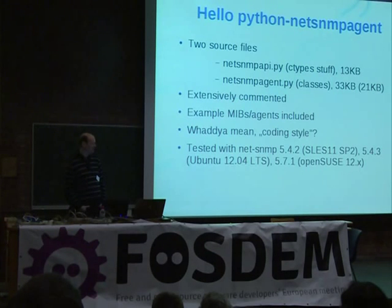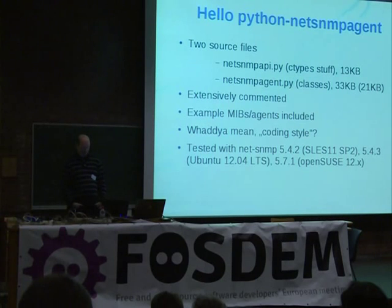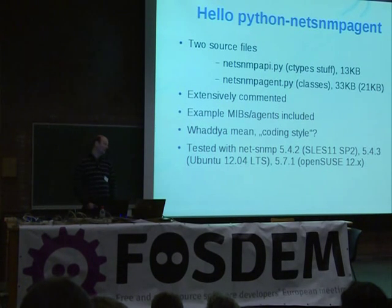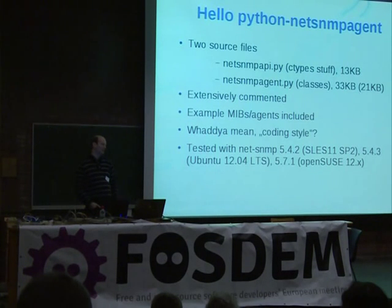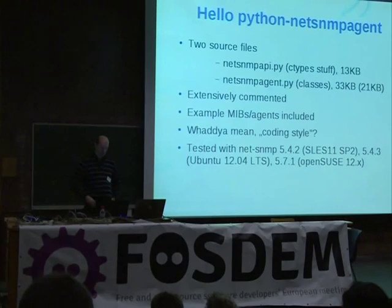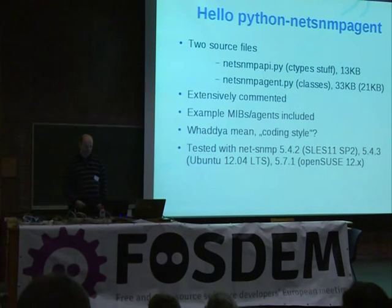There are example MIBs and agents included. The coding style is not particularly PEP8, it's more or less my own coding style but it's consistent. It's been tested with both 5.4 and 5.7 versions of NetSNMP, for the simple reason that it was targeted at enterprise Linux distributions — SUSE and Ubuntu — and they're still shipping 5.4, so I have to support those as well.